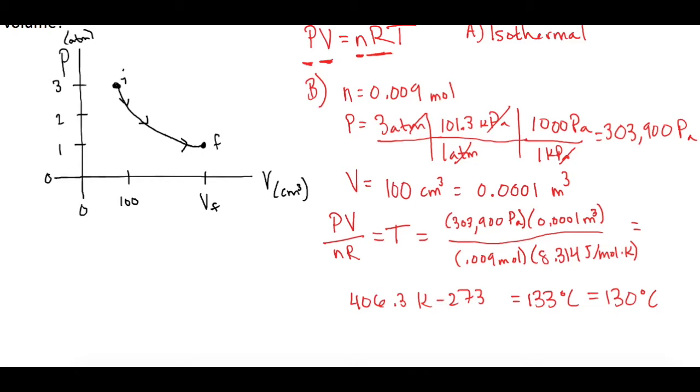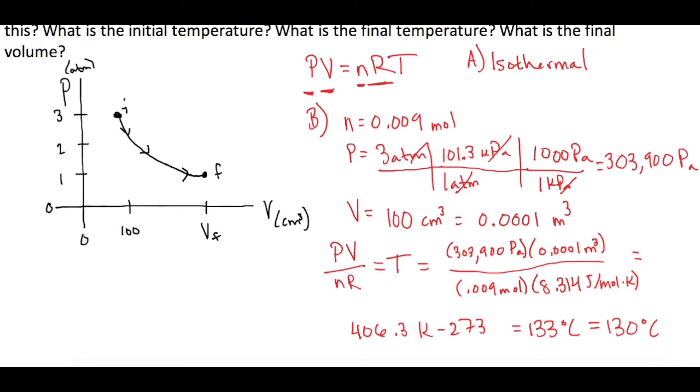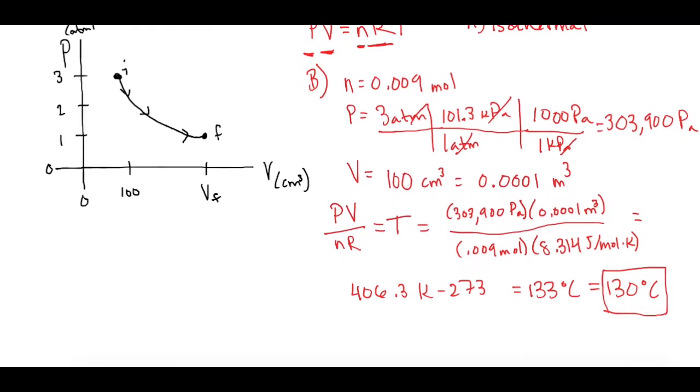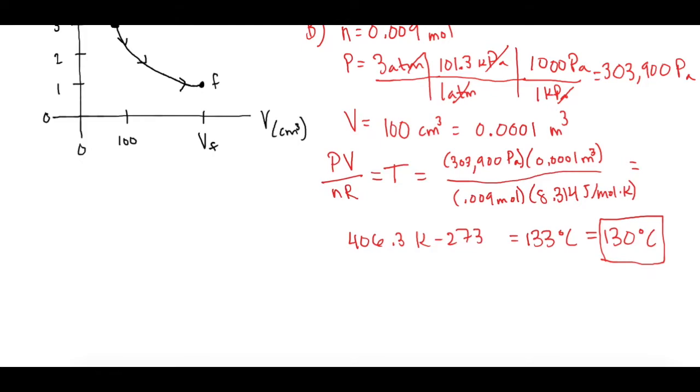Okay, so we just talked about up at the top here that this is an isothermal process. So we just figured out that the initial temperature is going to be 130 degrees Celsius but we just talked about that's not going to change. So for part C we're done. The final temperature for part C is 130 degrees Celsius or whatever you got for your numbers for part B.